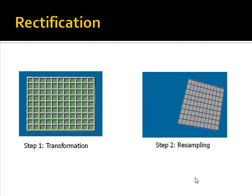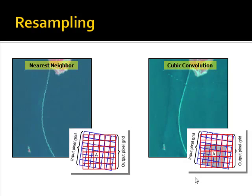Rectification generally involves two steps: one is transforming the coordinates, and two is resampling the pixels. You have to choose the appropriate resampling algorithm. Nearest neighbor simply chooses the nearest pixel value to the rotated output grid. Cubic convolution chooses a weighted average of the surrounding 16 pixels. Nearest neighbor does an excellent job preserving pixel values but creates rough edges, while cubic convolution distorts pixel values but provides smooth edges and realistic-looking features.